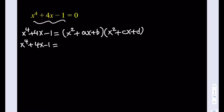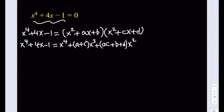We're going to get some interesting results from here. If you distribute, going by x powers: the x cubed term is going to be ax cubed plus cx cubed, so it's (a plus c)x cubed. The x squared term is going to be bx squared plus dx squared plus acx squared, so it's (ac plus b plus d)x squared. The x term is going to be ad plus bc times x. And finally our constant is bd.